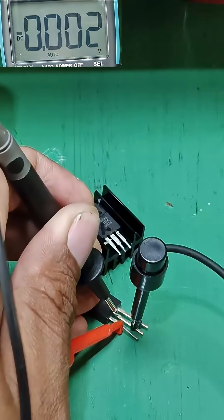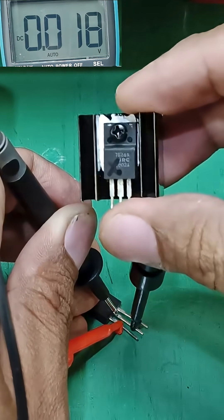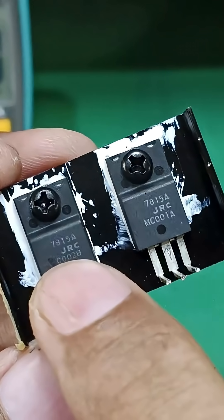So we have output 24 volts compared to the busted one which is zero output. Now let's test this 7915.